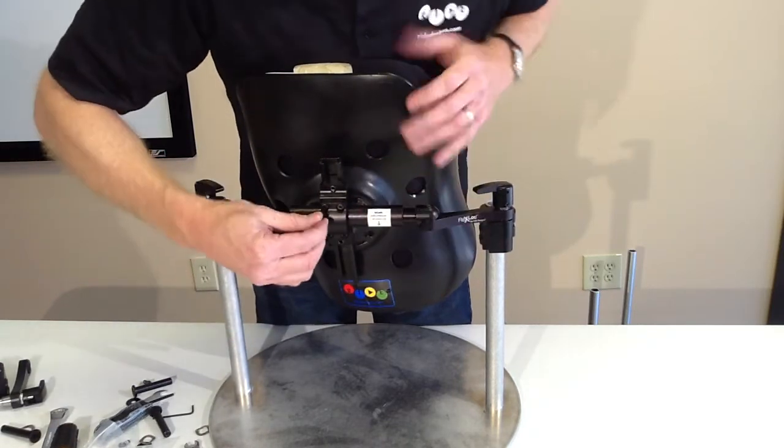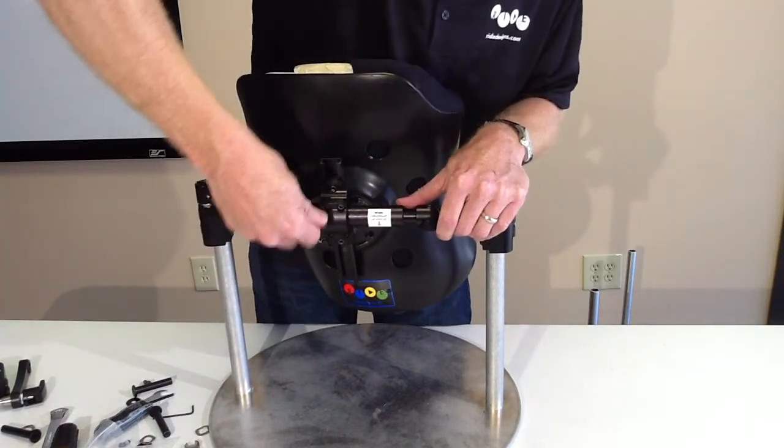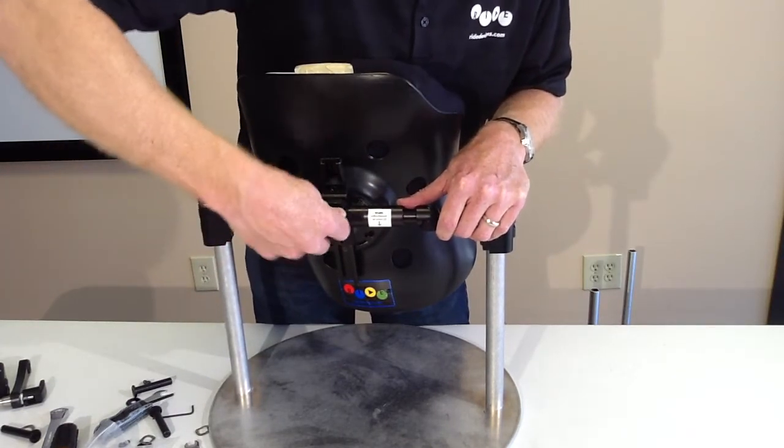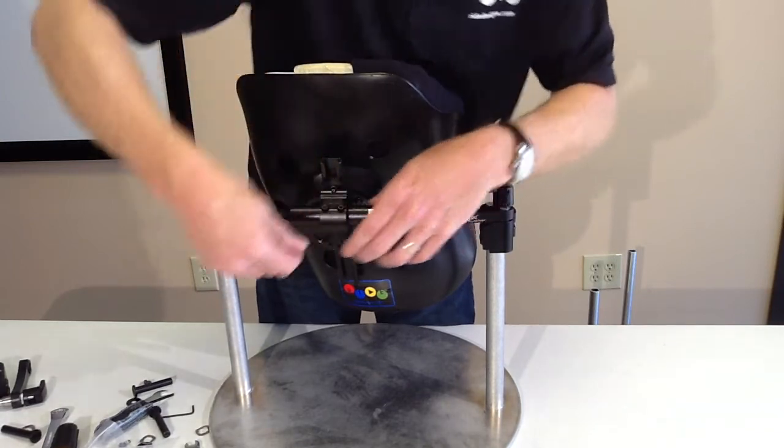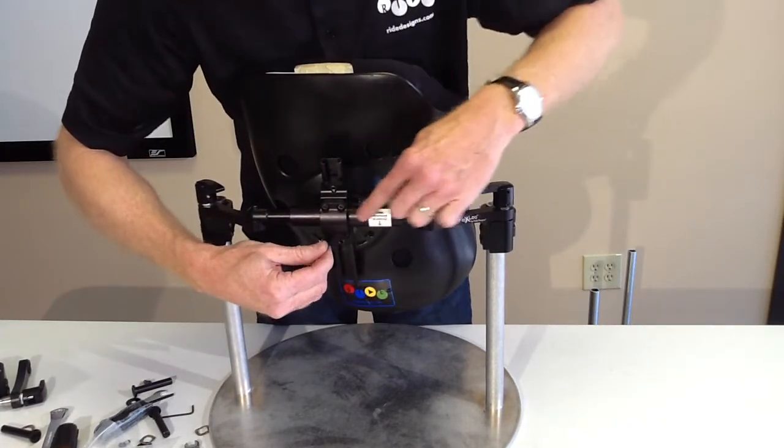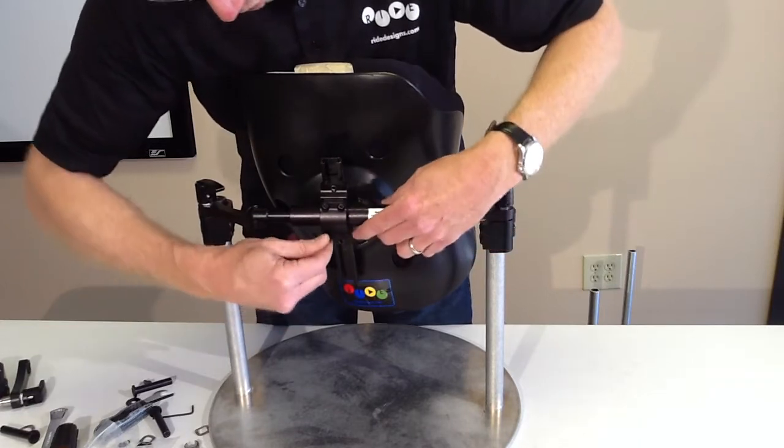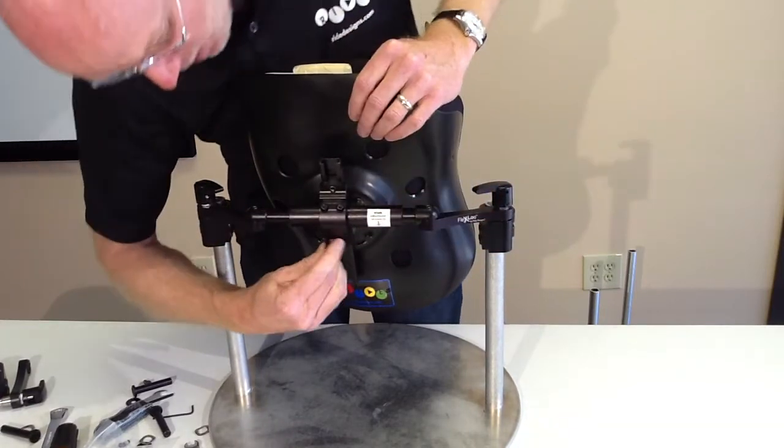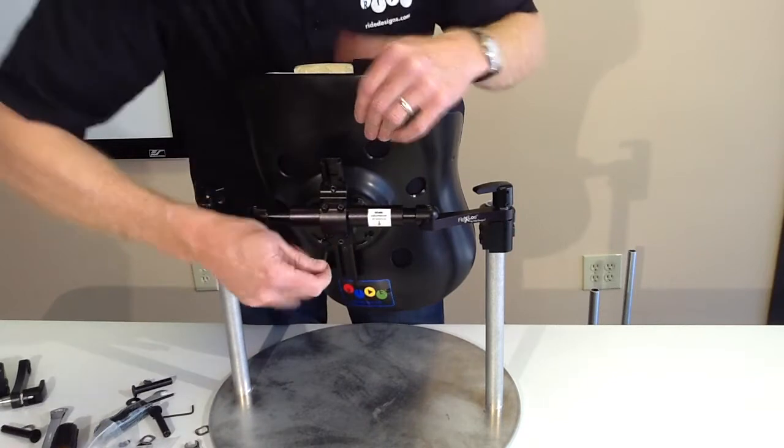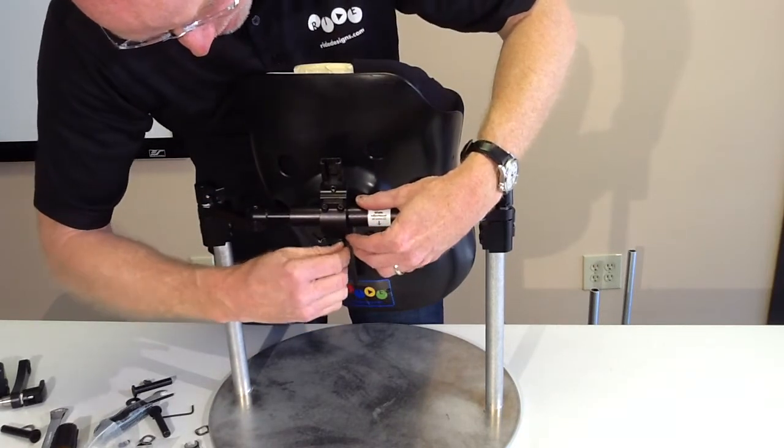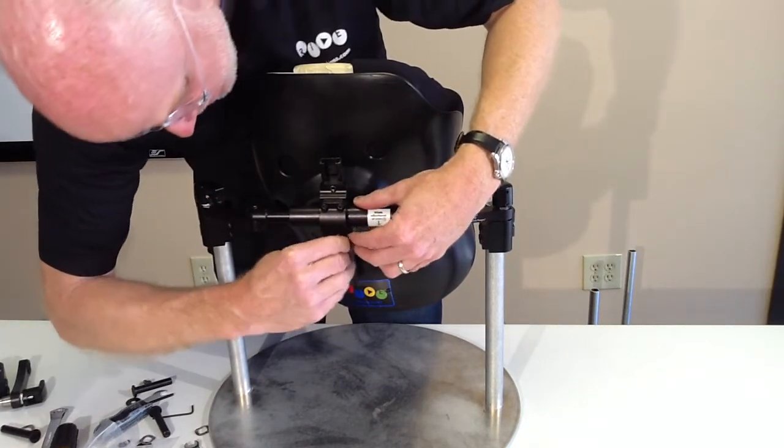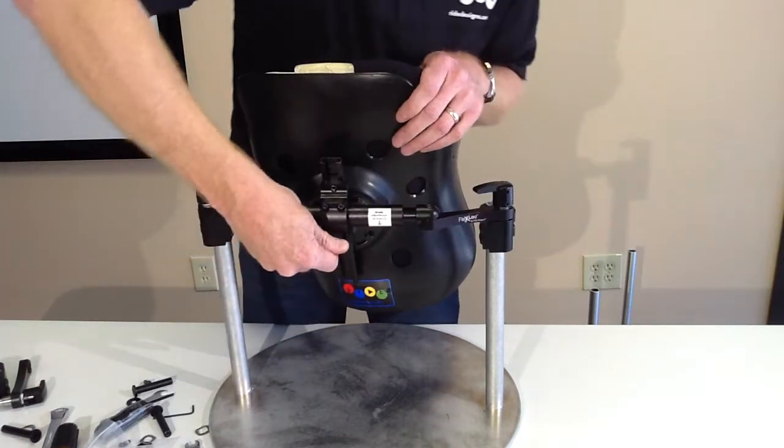Then I'm going to go to my back angle screws. Make sure I really lean on those because this clamp has teeth in it. It actually bites into this lateral tube, deforms it, and really locks that seat to back angle in. So you don't want to be light on those. Take your allen wrench and really lean on those.